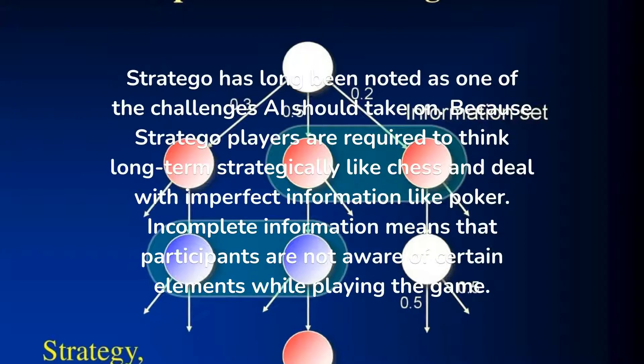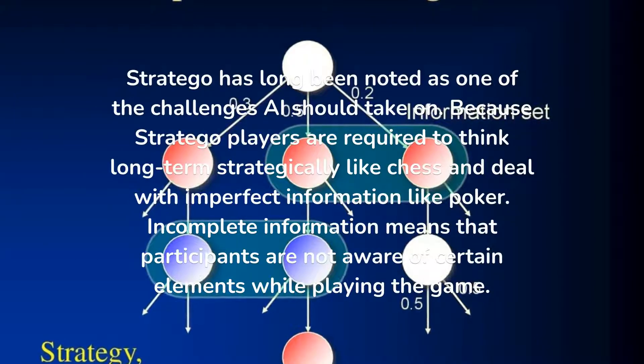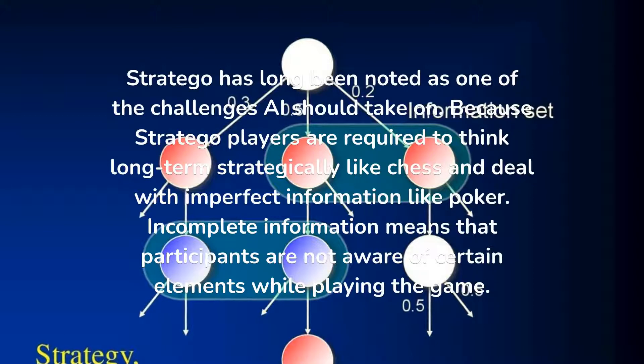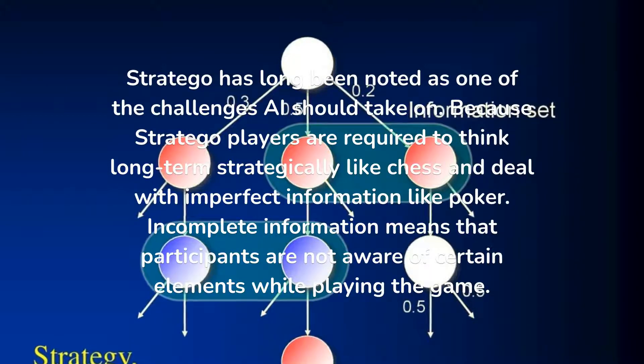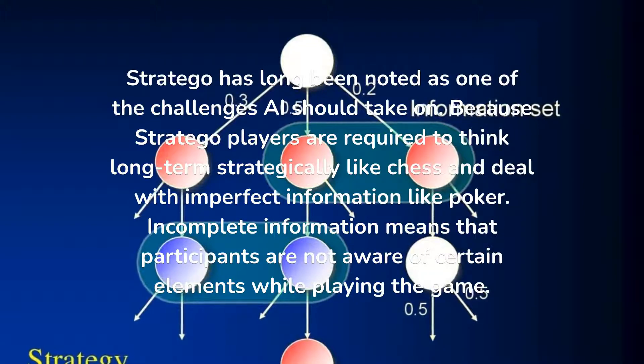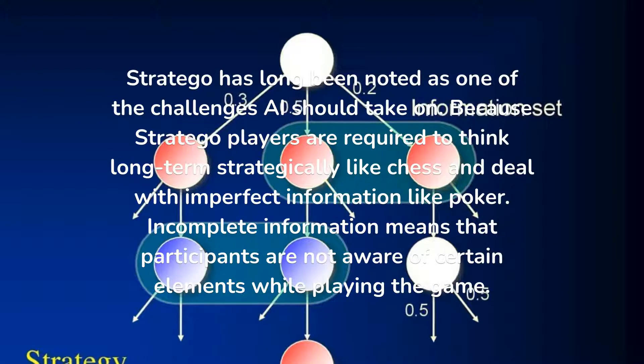Stratego has long been noted as one of the challenges AI should take on, because Stratego players are required to think long-term strategically like chess and deal with imperfect information like poker. Incomplete information means that participants are not aware of certain elements while playing the game.